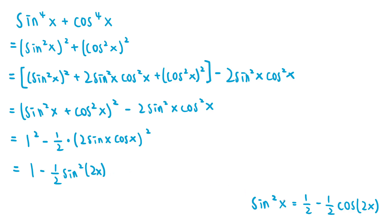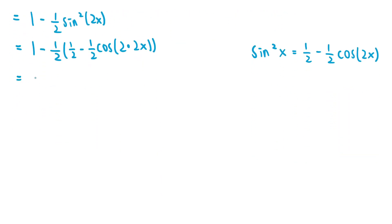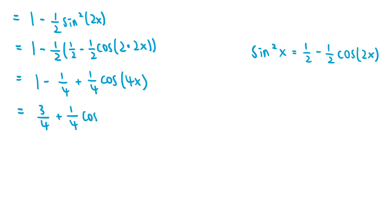We can use the power reducing formula — sine squared of x equals one half minus one half times cosine of 2x — to further simplify. Since we have sine squared of 2x, the argument is 2x, so we rewrite it as one half minus one half times cosine of 2 times 2x. Distributing the negative one half into the parentheses, this becomes 1 minus one fourth plus one fourth times cosine of 4x. Combining the constant terms gives us 3 over 4 plus one fourth times cosine of 4x.